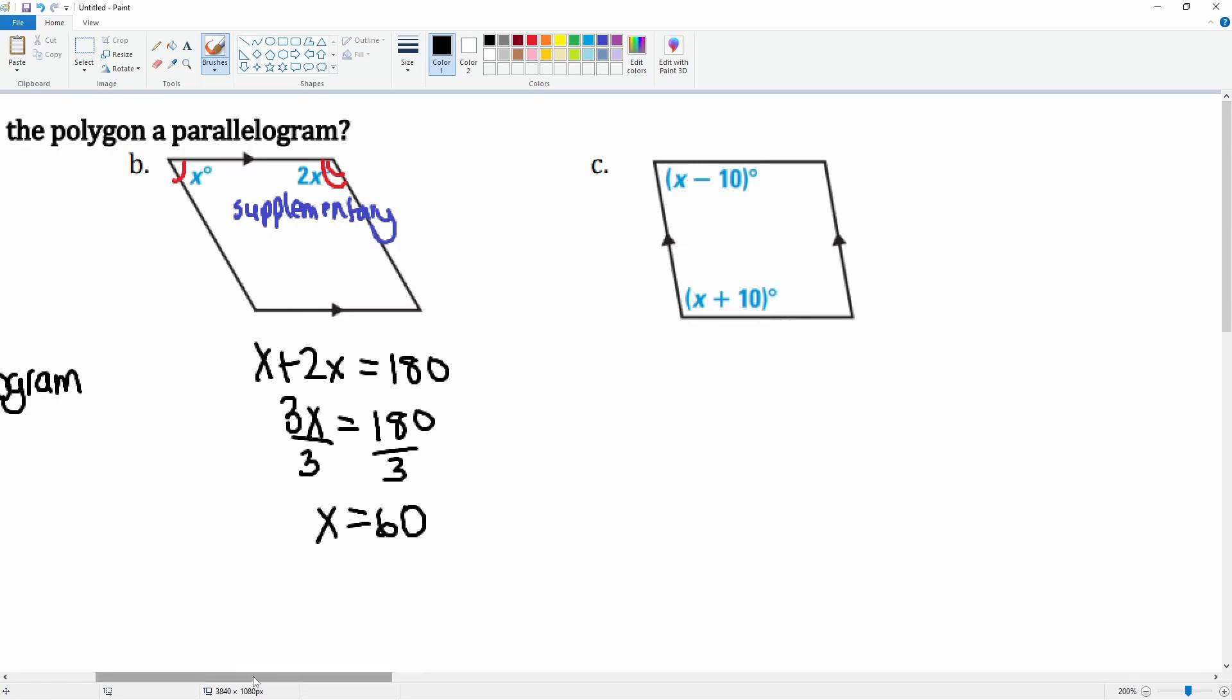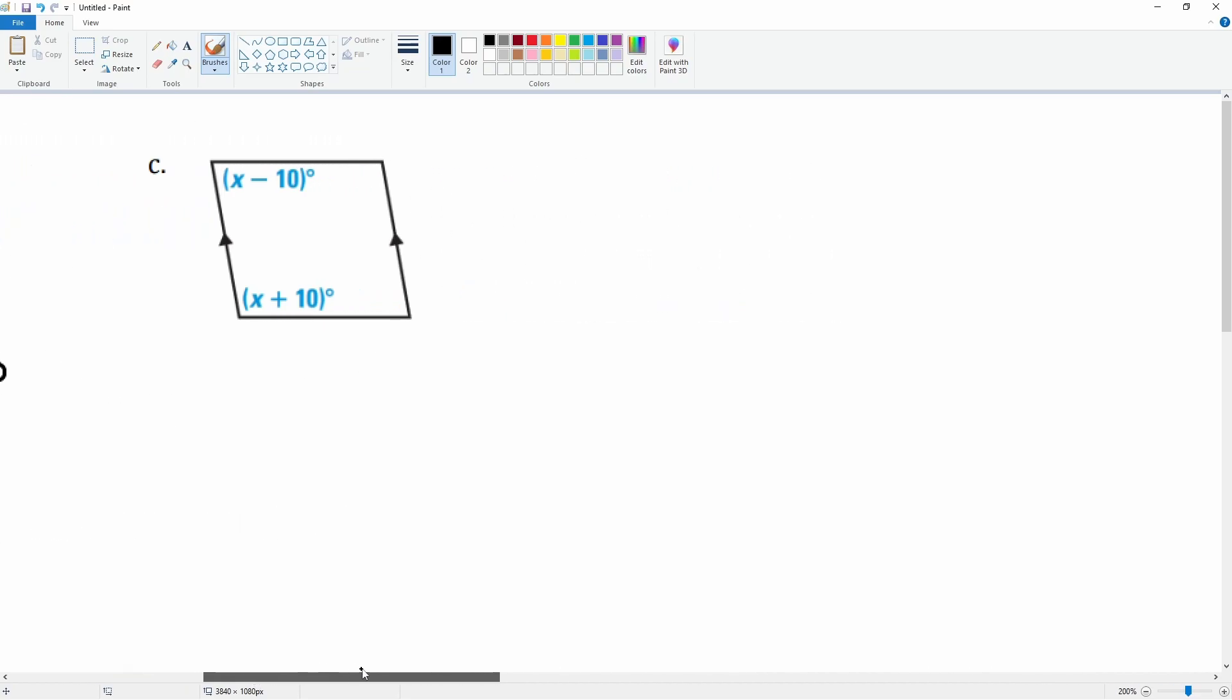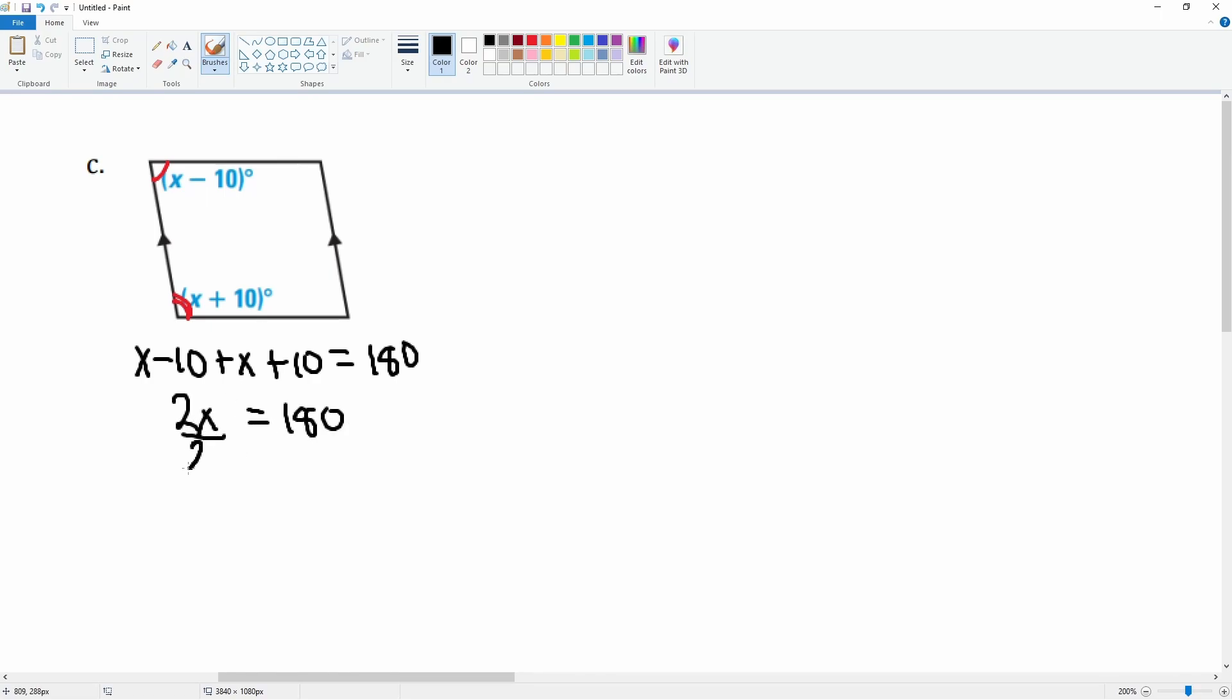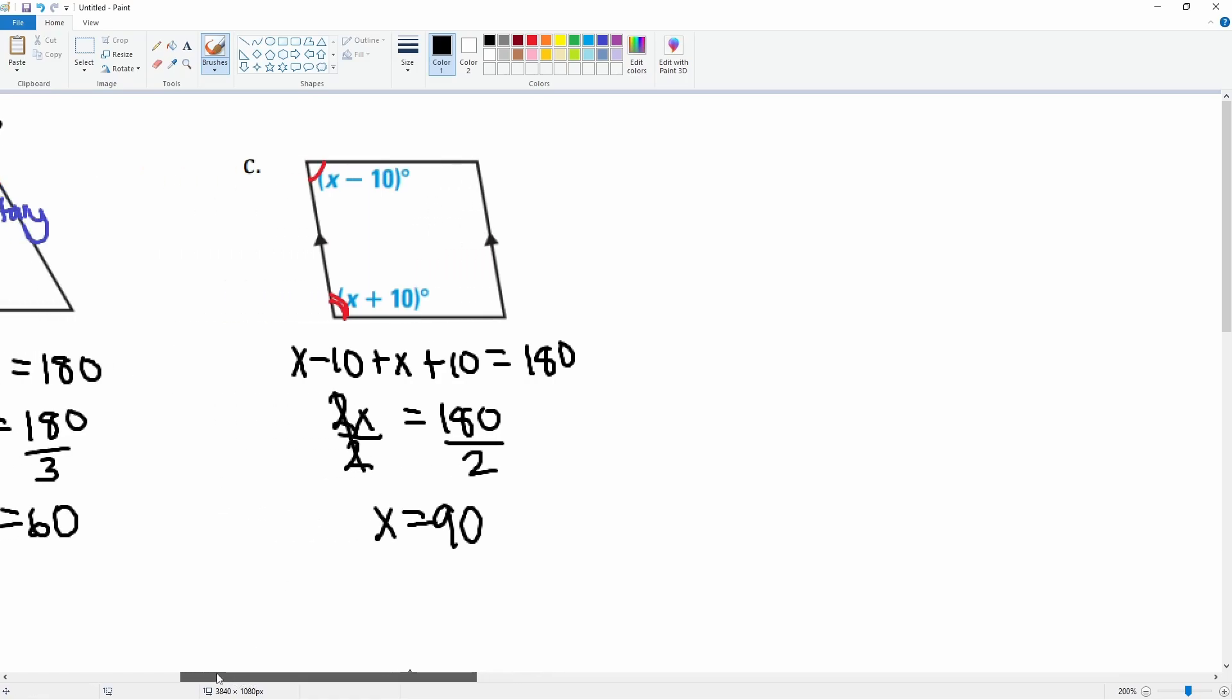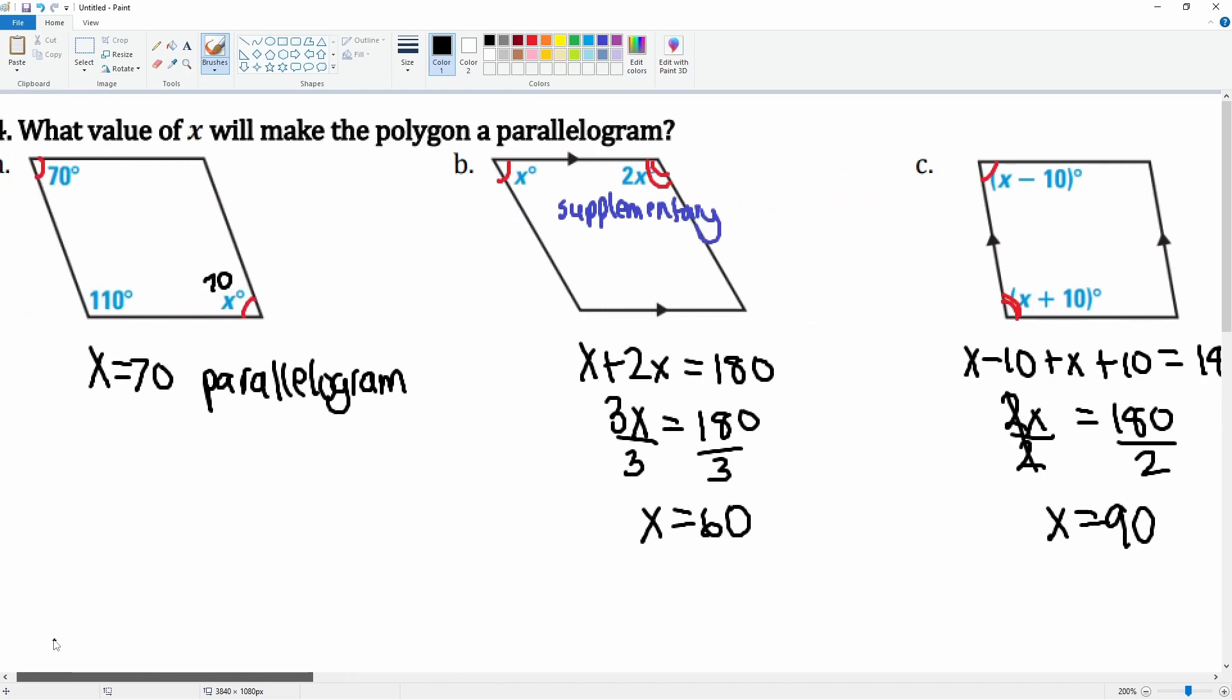Part d, we know that these are parallel. Therefore we can determine that these two angles here should be supplementary. So that means x minus 10 plus x plus 10 is equal to 180. x plus x is 2x, minus 10 plus 10 becomes 0. That equals to 180. Divide by 2 to both sides. This cancels, leaving you with x is equal to 90 degrees.